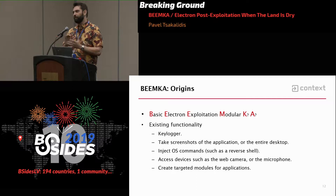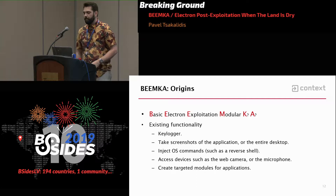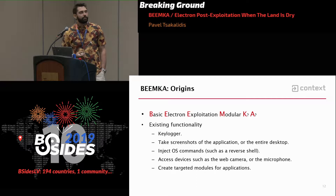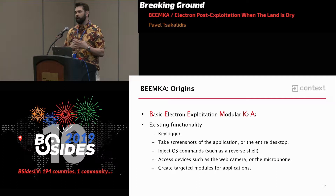Today I'll be talking about Electron post-exploitation when the land is dry, and I'll introduce a tool that makes the whole process a bit easier. Let's assume you're on a red team job, you've done your phishing campaign, somebody opens the Word document, and you get a beacon back. The next sensible step would be to find a way to persist on the system, but the endpoint is running some endpoint protection you've never heard of, blocking most things you try. That is where Electron applications come into play. I'll start with a demo to show how it works, then discuss how it can be exploited.